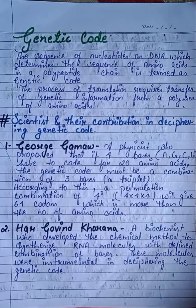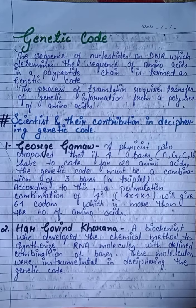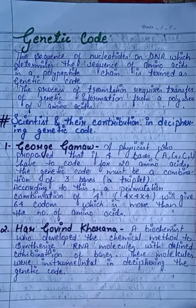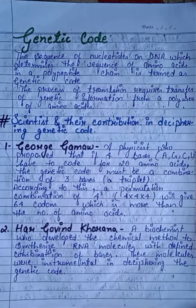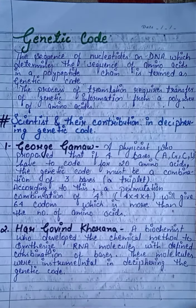The second scientist was Hargobind Khorana, a biochemist who developed a chemical method to synthesize RNA molecules with a defined combination of bases. These molecules were instrumental in deciphering the genetic code.